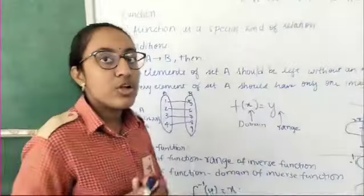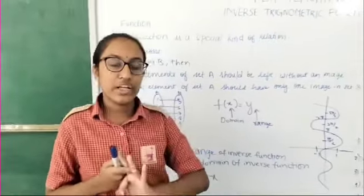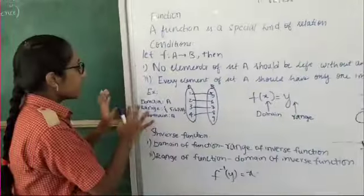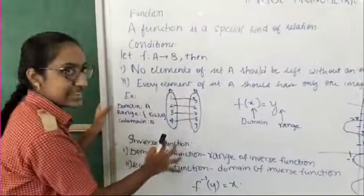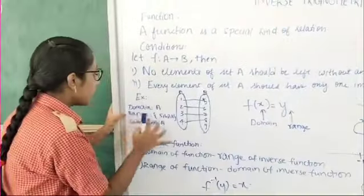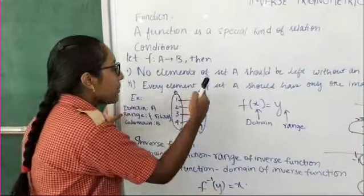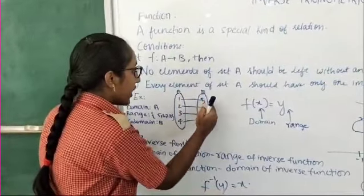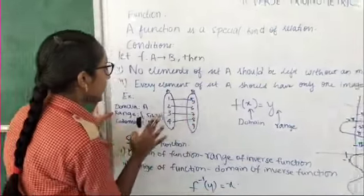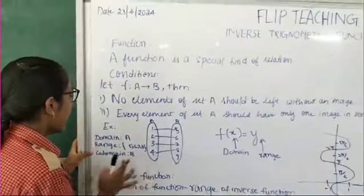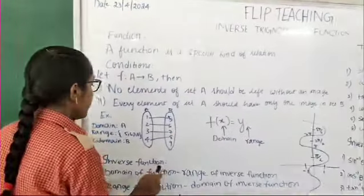We also need to talk about three terms: domain, range, and co-domain. The domain is all the elements in set A. The range is all the mapped images—that is 5, 6, 7, 8—which are the images of elements in set A. The co-domain is the entire set B.